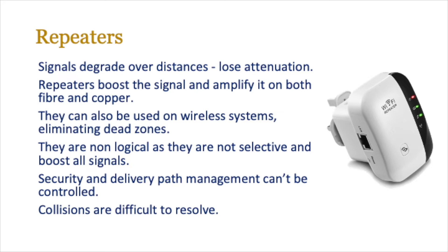You have your router in one particular place, and you put a repeater somewhere near the edge of the router's range, which takes the original signal and boosts it a bit further. These are called non-logical devices, which means they're not very selective — they boost all signals. There's no specific signal that needs boosting; they just take whatever comes their direction and boost it across. Security and delivery path management can't be controlled because they just repeat and pass information on. As a result, collisions are often very difficult to resolve, especially when you've got signals coming from all sorts of directions.